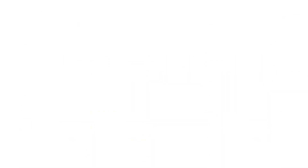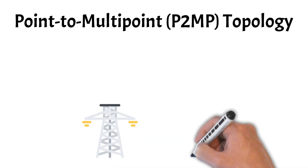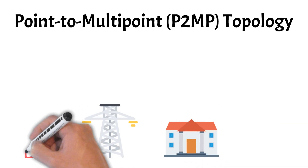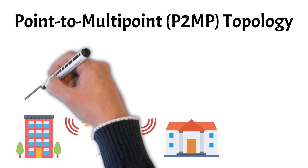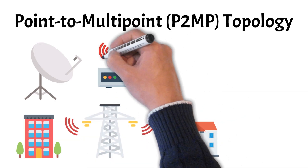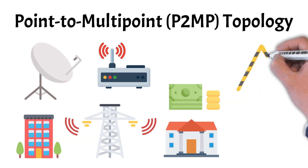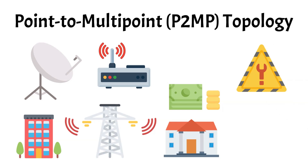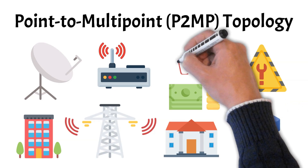In a point-to-multipoint topology, one central device — like a tower — connects to multiple endpoints such as offices or buildings. It's a logical topology, meaning we're focusing on how data travels, not the physical layout of cables. The central point manages communication with each connected node, forming several one-to-many logical links. This setup is common in wireless ISPs and campus networks where one access point serves multiple receivers. It's cost-effective and efficient, but as more devices connect, bandwidth can be shared and congestion may occur. A related concept here is broadcast, where instead of sending data to specific devices, a signal is transmitted to all nodes in the network.